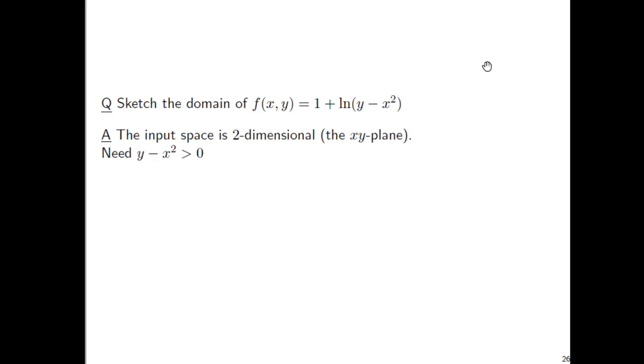The input space is two-dimensional, and the only restriction is a logarithm can only eat in a positive, so we need y minus x squared to be greater than 0. And if you add x squared to both sides, you have y is greater than x squared.